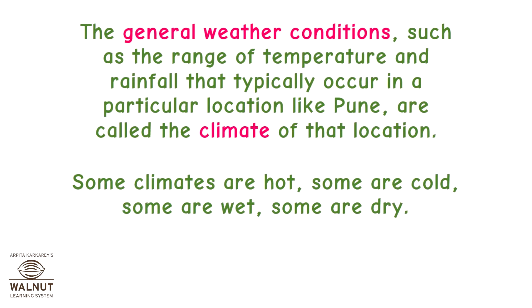The general weather conditions — such as the range of temperature and rainfall that typically occur in a particular location like Pune — are called the climate of that location. Some climates are hot, some are cold, some are wet, some are dry.